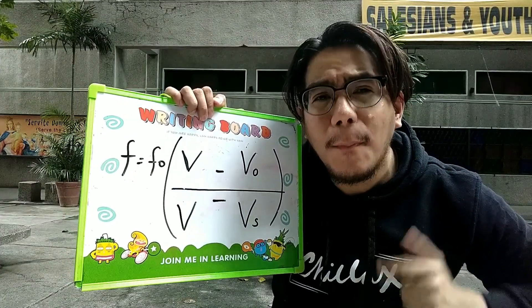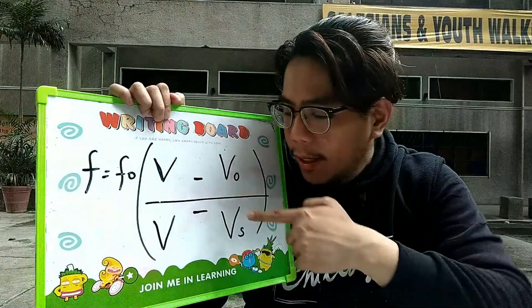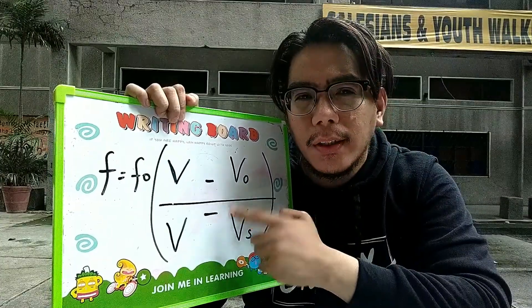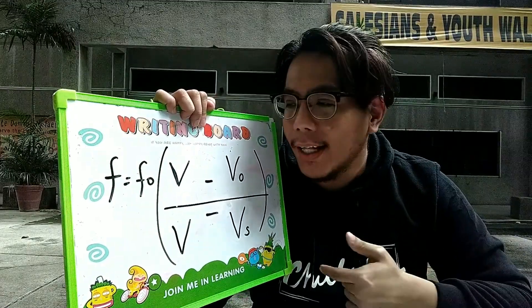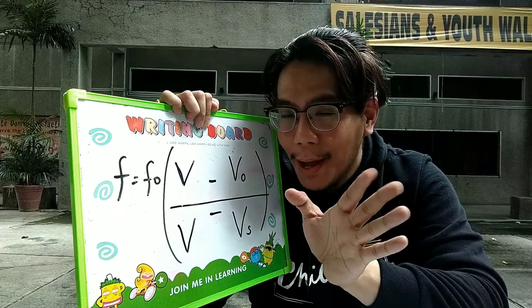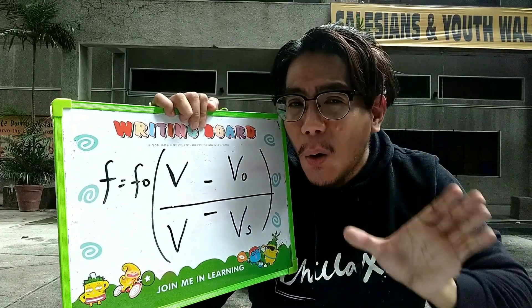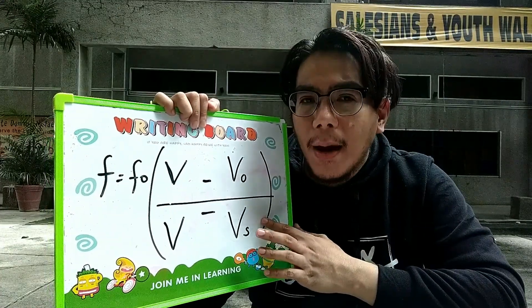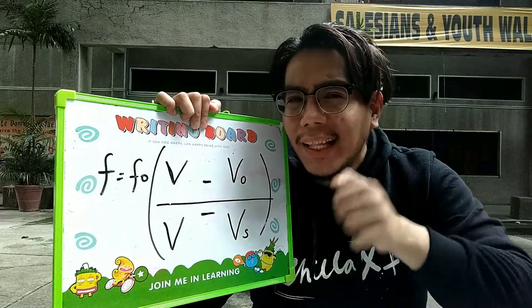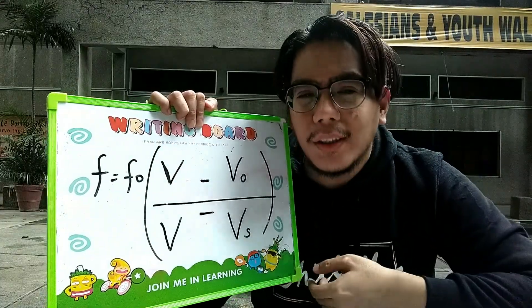Magbibigay pa ako ng pangalawang example. Bibigyan kita ng sampung segundo para ma-interpret itong formula na ito. Ang observer is going away, at ang source ay going towards. Alam na natin yung arrangement ng symbols sa numerator: plus, minus, minus, plus. Yung minus dito sa numerator symbolizes that the object is going away kasi ito yung lower sign dito sa numerator. Pero dito naman sa denominator, minus siya and it's the upper sign — meaning to say, the velocity of the source is going towards.